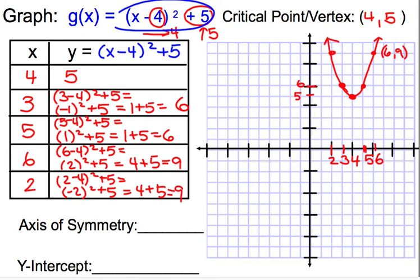If you remember axis of symmetry, axis of symmetry runs right through the vertex. That line is at x equals four. This point here is what we call our minimum, our vertex, over four, up five. So let's identify a few important pieces here.